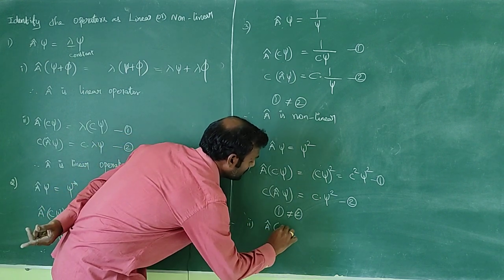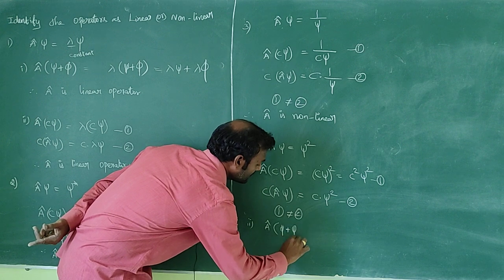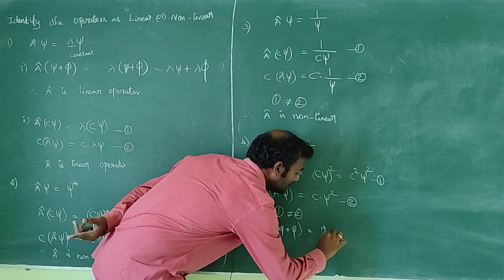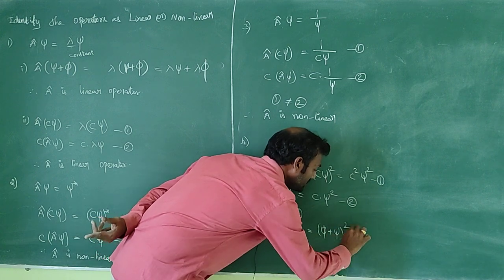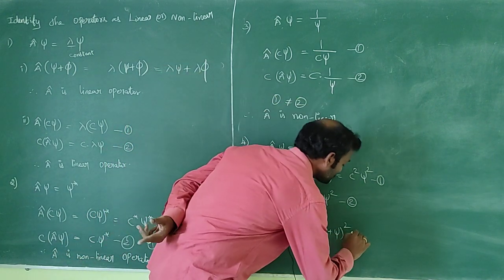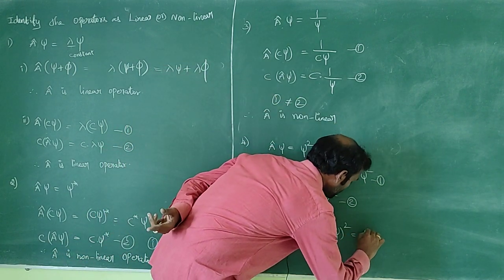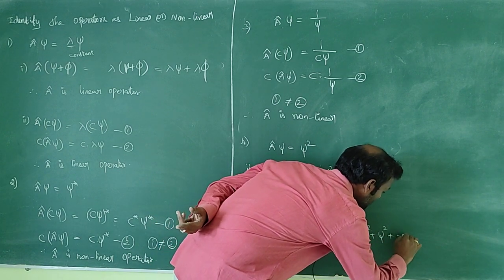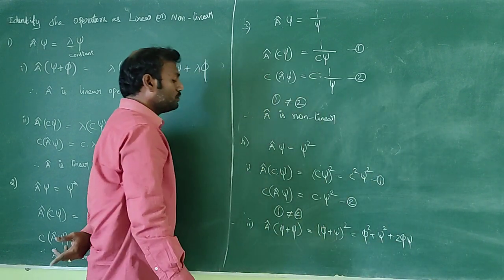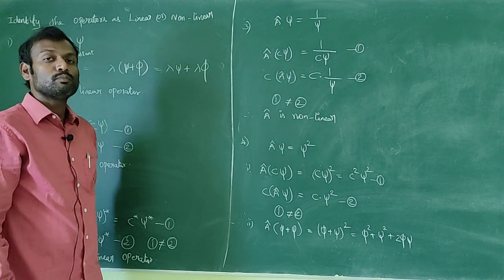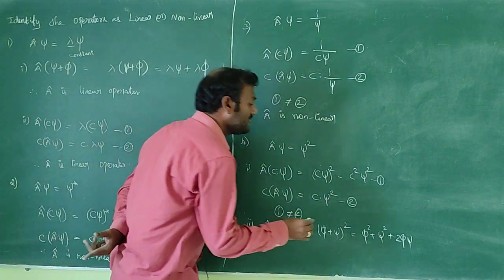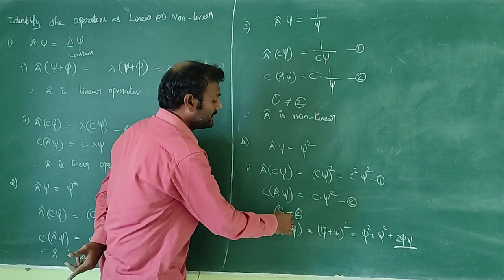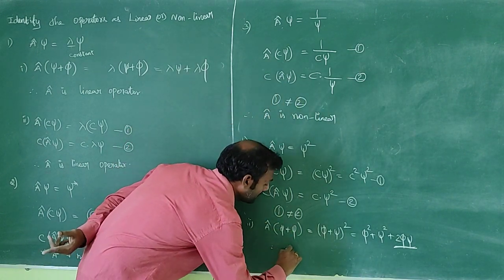Using the addition method: A-cap(π + ψ) gives (π + ψ)² which equals π² + ψ² + 2πψ. This is not equal to A-cap(π) + A-cap(ψ) = π² + ψ², since there is an extra 2πψ term. Therefore ψ² is confirmed as a non-linear operator.